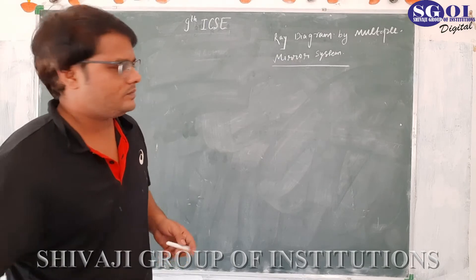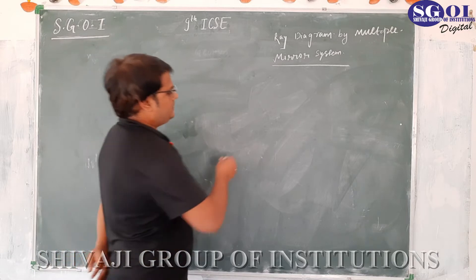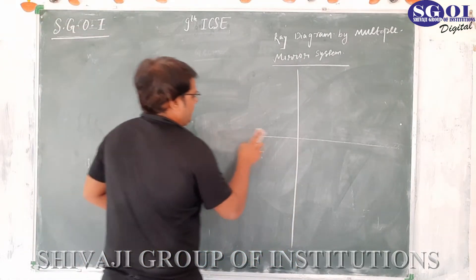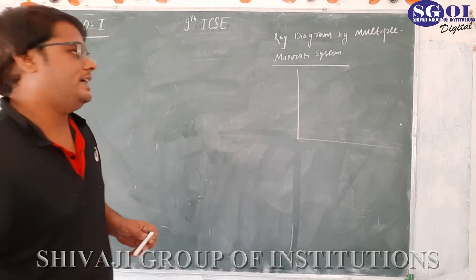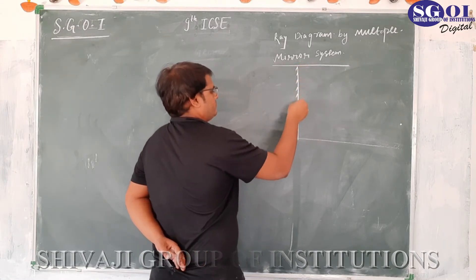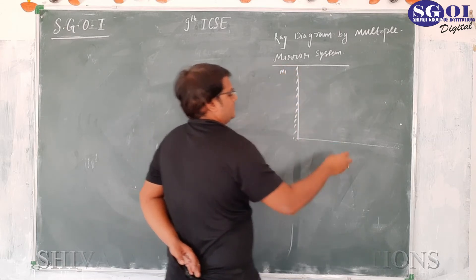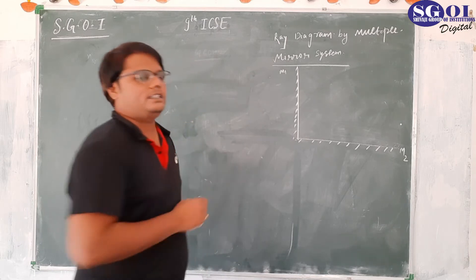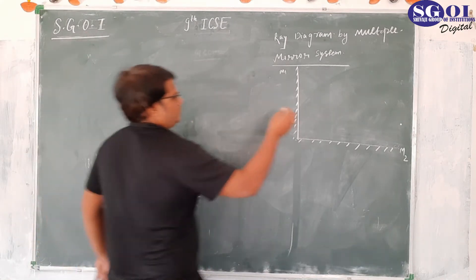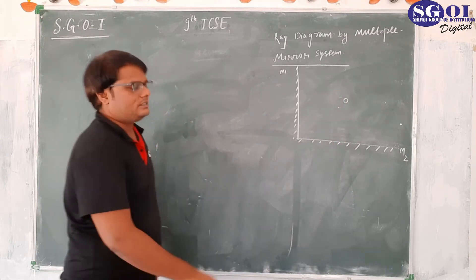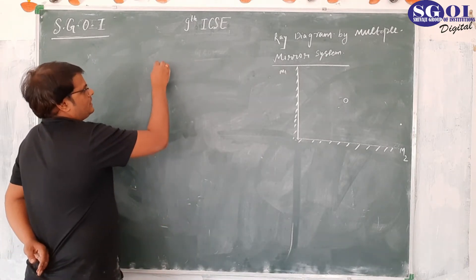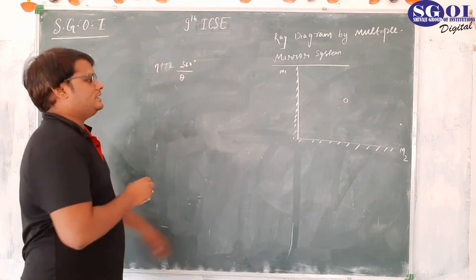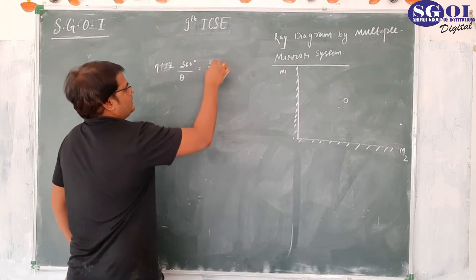Now we are going to use this method for two plane mirrors inclined at an angle. Suppose we have two plane mirrors — this is plane mirror M1 and this is plane mirror M2 — and the angle between them is 90 degrees. An object is placed between them. We have studied that to calculate the number of images, the formula is 360 degrees divided by theta. In this case, theta is 90 degrees.